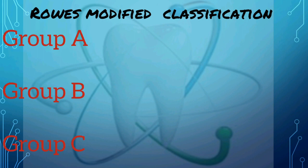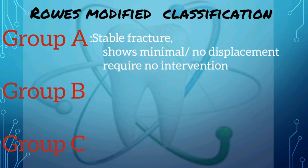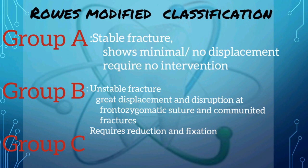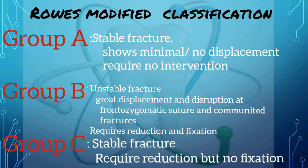According to Rowe's modified classification, the zygomatic complex fractures are divided into three groups: Group A, Group B, and Group C. In Group A, there is a stable fracture showing minimal or no displacement and requires no intervention. In Group B, there is an unstable fracture with great displacement and disruption at the fronto-zygomatic suture and comminuted fractures — it requires reduction as well as fixation. In Group C, there is a stable fracture but other types of zygomatic fractures which require reduction but no fixation.